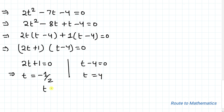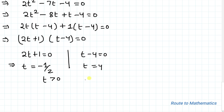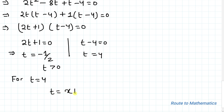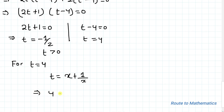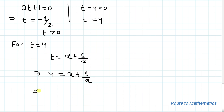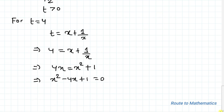Since t must be greater than 0, t equals minus 1 by 2 would give an imaginary value of x, so that value of t is discarded. Now let's find the value of x for t equals 4. We know t equals x plus 1 by x, so 4 equals x plus 1 by x, which gives us 4x equals x squared plus 1, and therefore x squared minus 4x plus 1 equals 0.